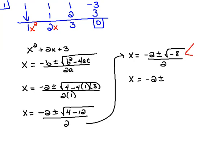To clean this up, we would have to break 8 up into 4 times 2, and then take the square root of each one. So this would be 2i square root of 2, all over 2.